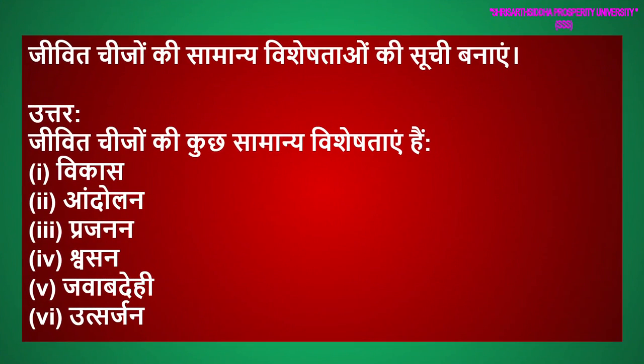जीवित चीज़ों की सामान्य विशेषताओं की सूची बनाएं। उत्तर। जीवित चीज़ों की कुछ सामान्य विशेषताएं हैं: विकास, आंदोलन, प्रजनन, श्वसन, जवाबदेही या संवेदना, उत्सर्जन।